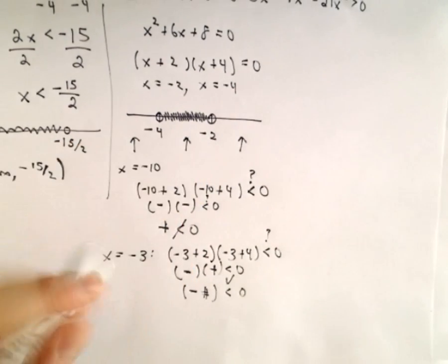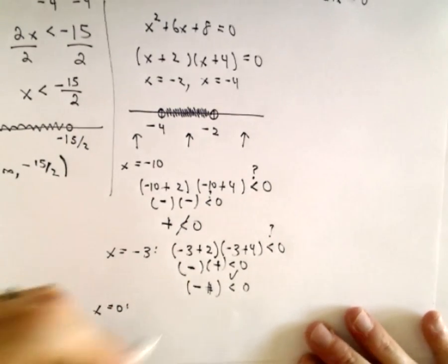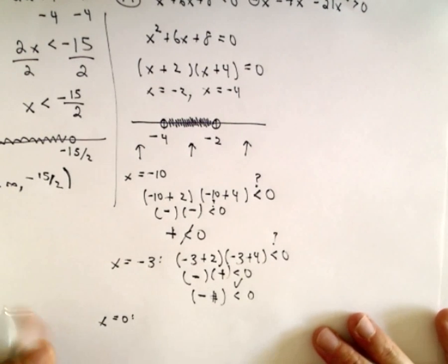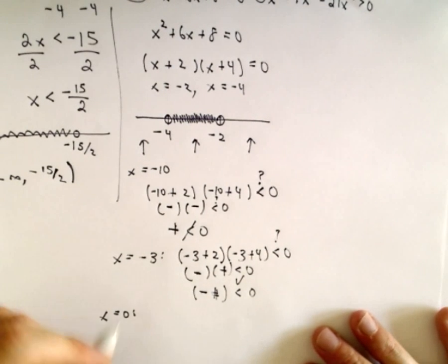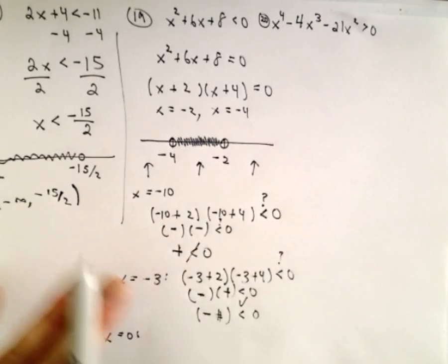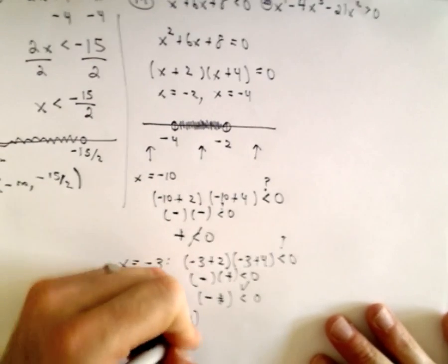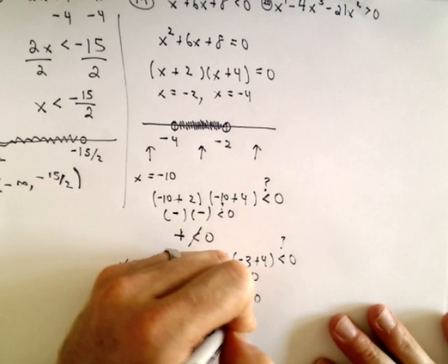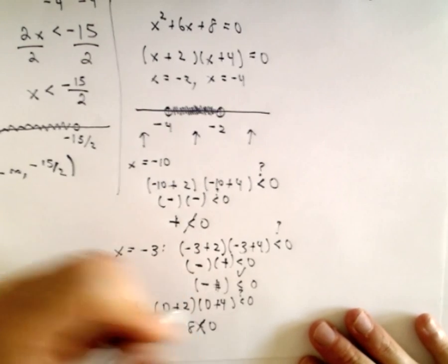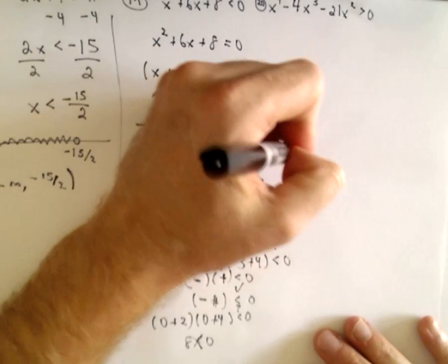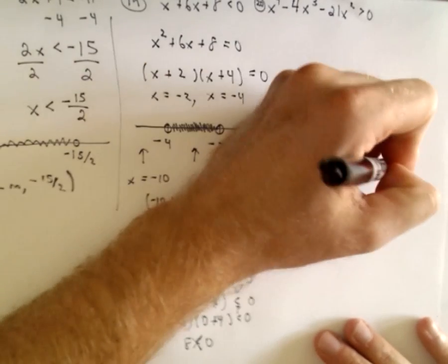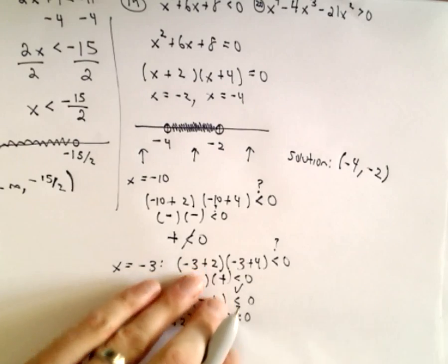If you take something greater than negative 2, say x equals zero: zero plus 2 times zero plus 4 — that's a positive times a positive, which is 8, and 8 is not less than zero. So the solution set in this case will be from negative 4 to negative 2, using parentheses because those values are not included.